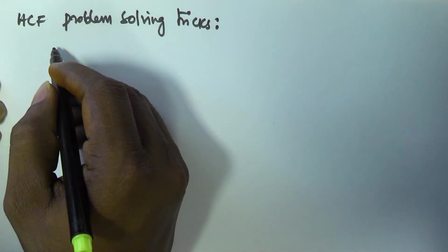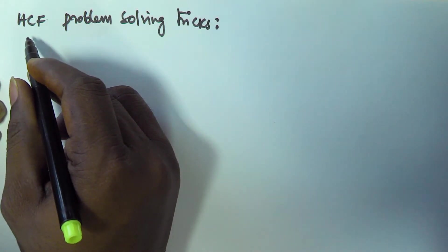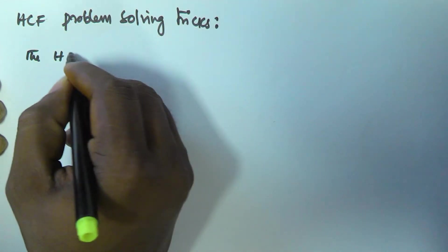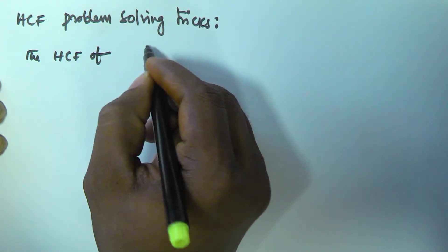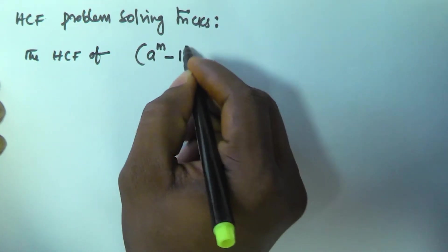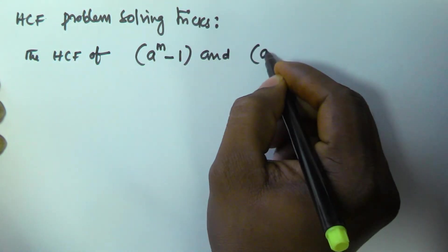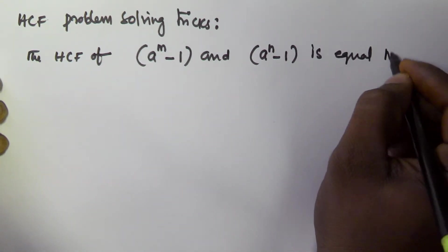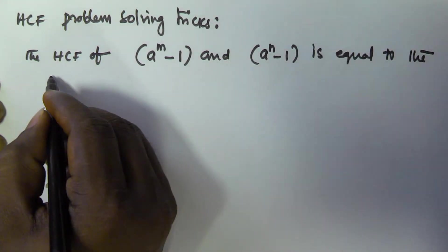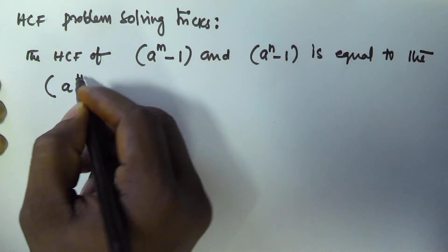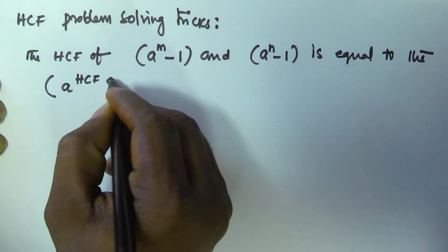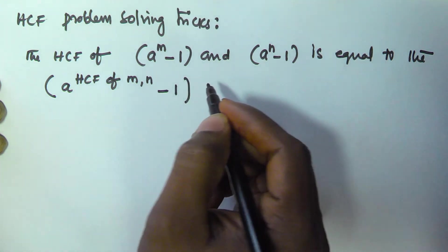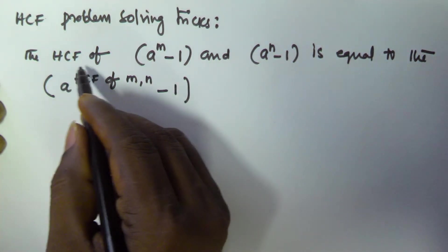Hello friends, in this video we will see a trick related to solving HCF problems. The HCF of a to the power of m minus 1 and a to the power of n minus 1 is equal to a to the power of HCF of m comma n minus 1.